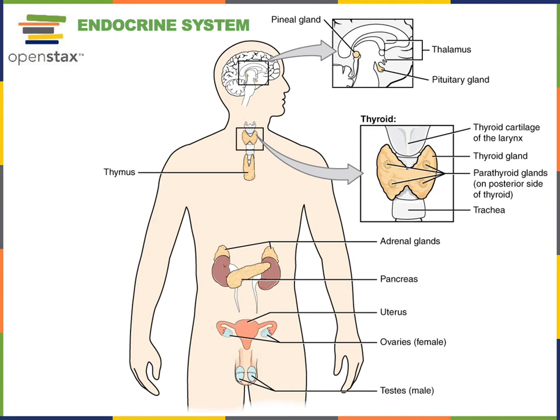For example, the thyroid gland produces a hormone known as thyroxine, also known as T4 — the thyroid hormone T4. That hormone then has an effect on target cells throughout the body, such as skeletal muscle fibers, and thyroid hormone will stimulate an increase in metabolic rate.